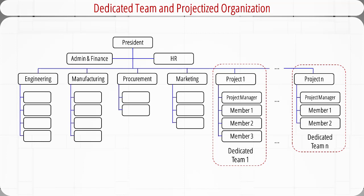A dedicated project team is a way of managing projects as a separate unit in addition to the functional divisions and departments. A full-time project manager pulls together a core group of specialists from relevant departments, and they all work full-time on the project. Team members can be recruited from within and outside the parent company. Functional departments are responsible for providing support for these dedicated teams. If projects are the dominant form of business, the organization is called a projectized organization — where dedicated teams run each project and functional departments play only a supporting role.